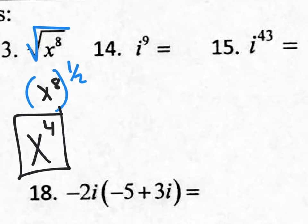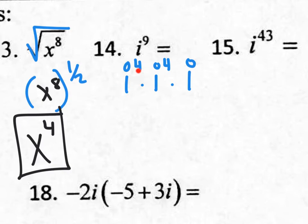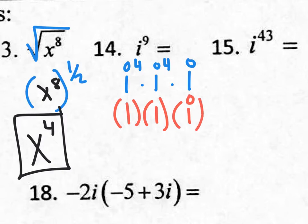Number 14: i to the 9th. Remember from class, i squared is negative 1 and i to the 4th is 1. When we think of i to the 9th, I could rewrite this as i to the 4th times i to the 4th times i — because 4 plus 4 plus 1 equals 9. Since i to the 4th is 1, you really have 1 times 1 times i. So the answer is just i, because 1 times 1 is 1 and 1 times i is i.